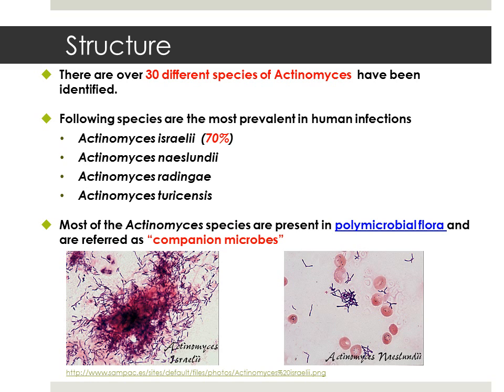Over the years more than 30 different species of Actinomyces have been identified. However, over 70% of the most prevalent human infections are caused by Actinomyces israelii. Other species like Actinomyces naeslundii, Actinomyces radingae, and Actinomyces turicensis have also been reported. Since Actinomyces are found in human commensal flora, they are present in polymicrobial flora and are referred to as companion microbes.